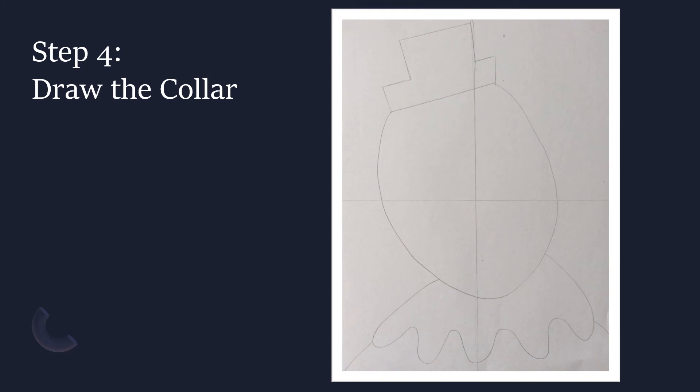Step four: next we're going to draw a wavy line for the collar. You'll want to start at the lower section of one side of your face shape and end at the other. I wanted a really thick bell collar, so I brought my line down a little bit before starting the curve to create that. I also drew a line on each side of the collar down to the edge of the paper in order to create shoulders and a shirt underneath the collar.